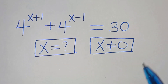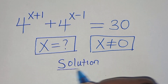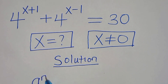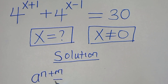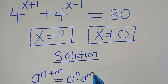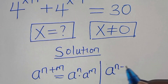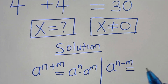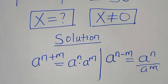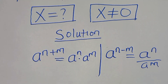Given that x is not equal to 0, let's find a solution. This exponential equation uses the property a to the power of n+m which can be expressed as a^n times a^m, and also a to the power of n−m which can be expressed as a^n over a^m. Let's apply these two exponent properties.